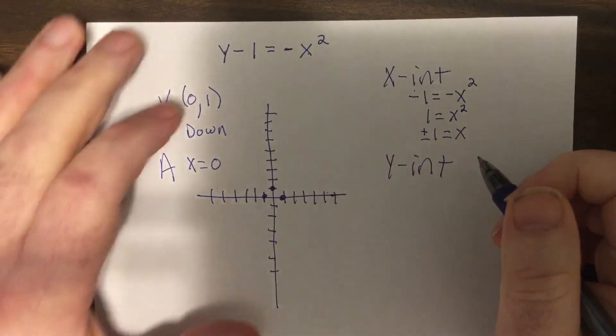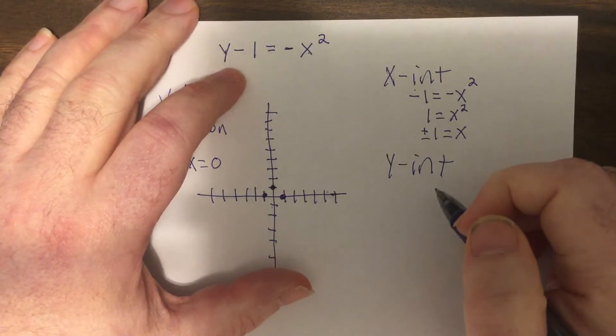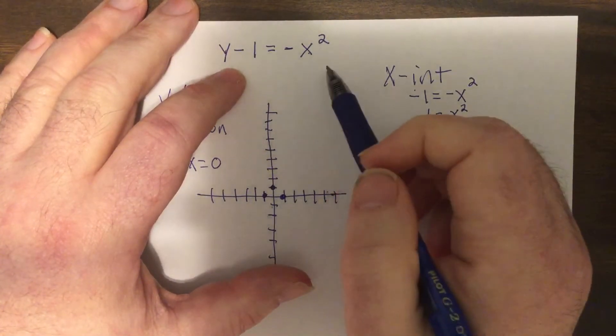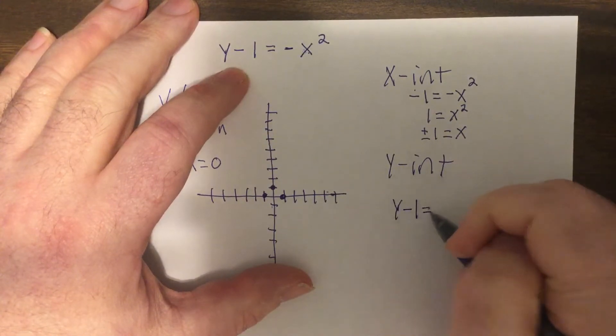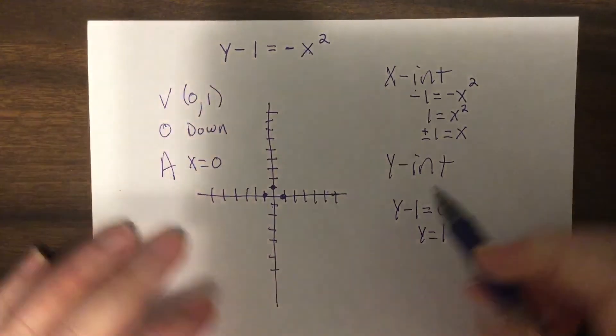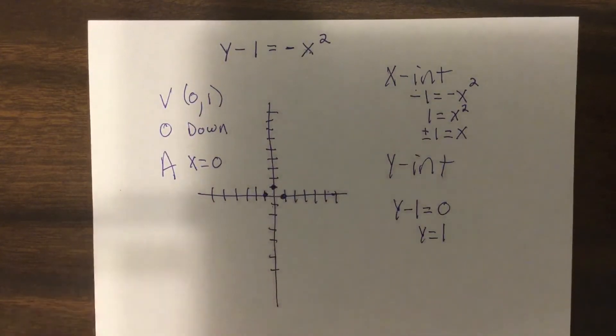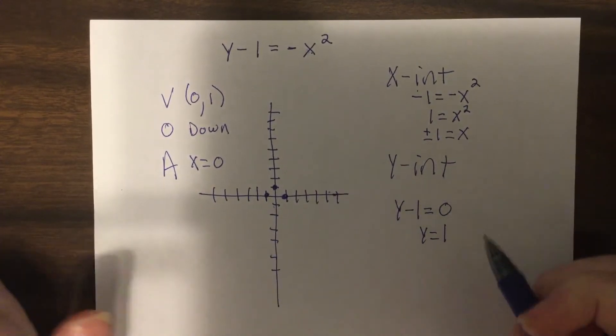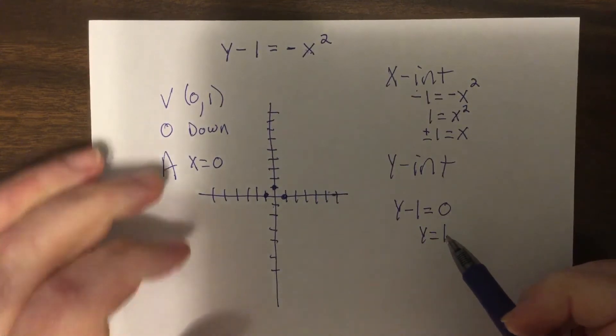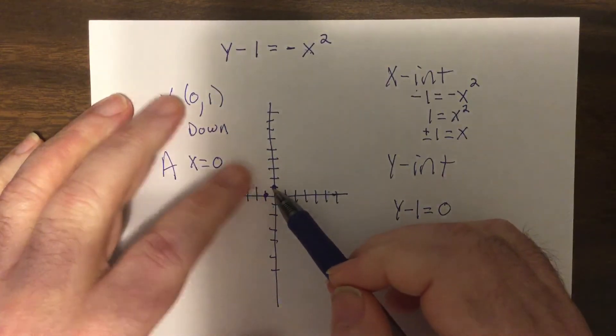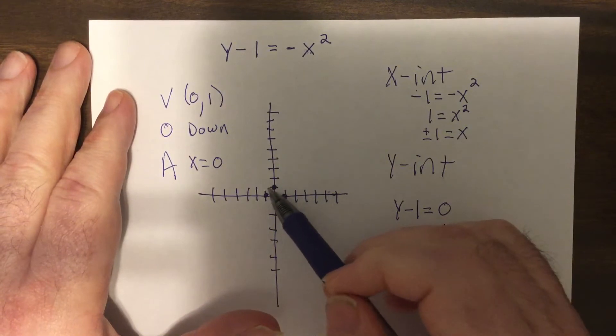Then the Y intercept put zero in for X. That'd be Y minus one equals zero. Add one. Oh, oh, shoot. I should have already noticed. Actually, I did know, but I'm going to act like I didn't. Holy bananas. Notice I already have the Y intercept. That's our vertex.